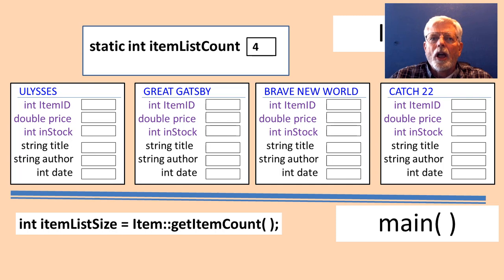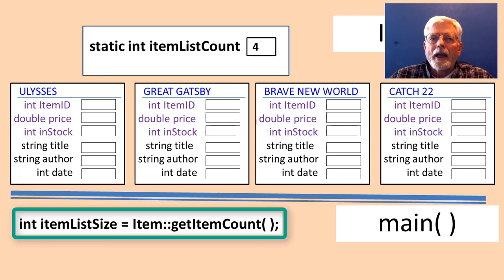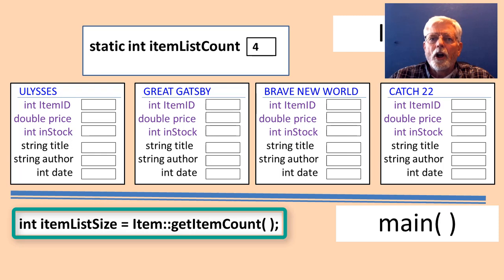Here is an example of four item objects. Each object has its own copy of the non-static member data. Because itemListCount is declared static, there is only one copy shared among all objects — it is located as part of the class definition instead of being part of each object that is instantiated. The main program has the code int itemListSize = item::getItemCount() to get the value from itemListCount. Since static data is shared between all objects, it does not belong to any one object. The item::getItemCount uses the class name and the scope resolution operator :: instead of using the name of an object.